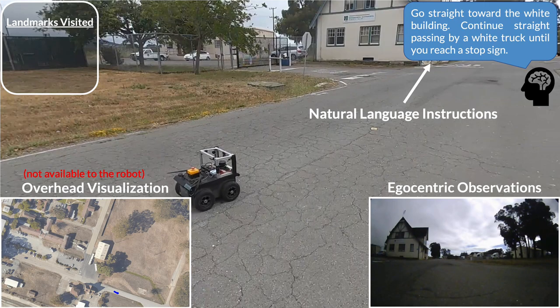Let's look at some examples of LMNav in action. As a legend: the central frame shows a third-person video of our system in action; at the top right is the instruction given by the user, which is the input to the language model; at the bottom right, we show the robot's egocentric observations captured by an onboard forward-facing RGB camera; at the bottom left is the visualization of the trajectory taken by the robot overlaid on a satellite image. Note that the third-person video and overhead image are not available to our system and are shown here solely for visualization of LMNav's behavior. At the top left, we also keep track of the landmarks visited by our system as time progresses.